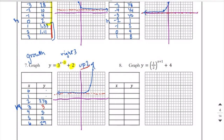On number 8, this is a decay function based off of our base being between 0 and 1. Our plus 1 out here is really a minus negative 1, so that is shifting left 1, which means our h value is negative 1. The plus 4 is shifting everything up 4, which means when we draw in our axes, we're going to go up 4 to put our asymptote in, and our asymptote is going to be up there.